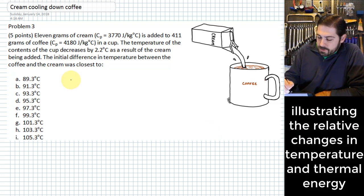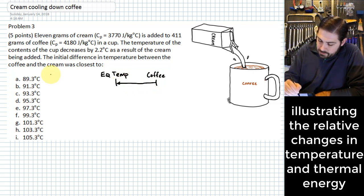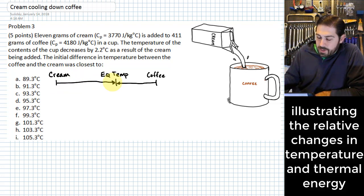To illustrate this, I'm going to show on a number line the idea that we're going to hit an equilibrium temperature. The coffee starts out hotter and has to come down to this equilibrium temperature. The cream has to start out colder and it is going to increase in temperature.